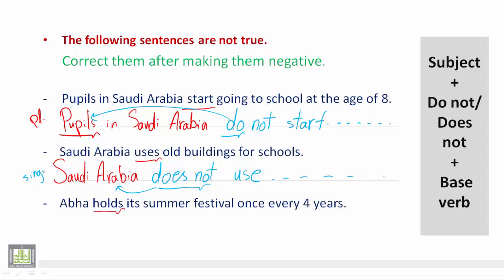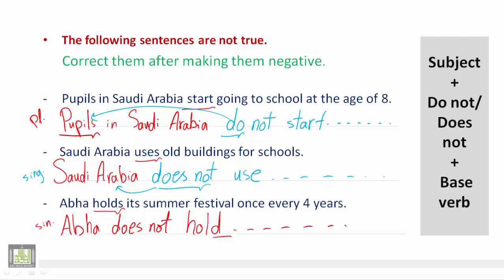The last sentence: 'Abha holds its summer festival once every four years.' Of course this is not true, so we say 'Abha' — it is singular — مفرد — so we use 'does not hold' without any additions, etc.